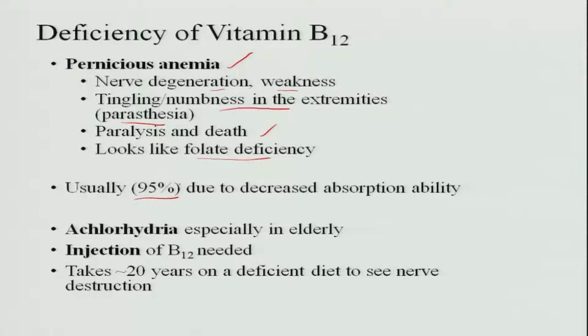Usually 95 percent of B12 deficiency is due to decreased absorption. Vitamin B12 absorption requires an intrinsic factor, which we discussed in the digestion, absorption and utilization of nutrients. This intrinsic factor is produced in the stomach; it binds vitamin B12 and takes it into the circulation. When intrinsic factor is not produced — for example, due to surgery like gastrectomy or partial gastrectomy — B12 is not absorbed.